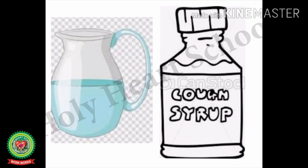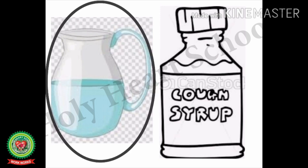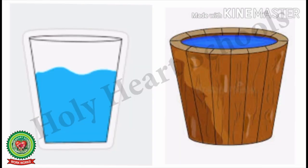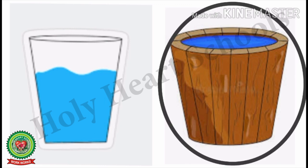Here is the picture of a jug and a cough syrup. We will see which of them has more capacity. The answer is jug, so we will circle it. Let's take one more example — here the picture of a glass and a tub is given. We will see which has more capacity, and the answer is a tub. So we will circle the tub.